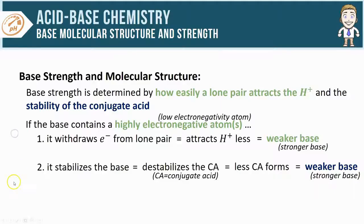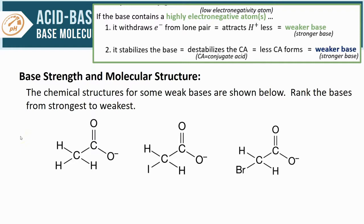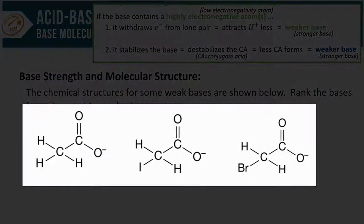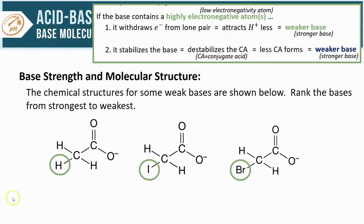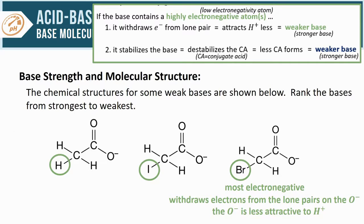Let's close it out with an example. I've got some chemical structures for some weak bases shown here and we're going to rank them from strongest to weakest. If you start analyzing these structures, you'll notice that they're all pretty much exactly the same except for one atom: the hydrogen, the iodine, and the bromine. The key here are the different electronegativities of those atoms and the effect that has. The bromine is the most electronegative out of the list. That means it withdraws electrons more strongly than iodine and hydrogen will, which makes that O minus less attractive to any H pluses floating around. That's going to make this the weakest base on the list. And for the same but opposite reason, the one with hydrogen will be the strongest base.